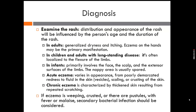Examine the rash — its distribution and appearance will be influenced by the patient's age and duration of the rash. In adults, generalized dryness and itching is the main finding; eczema on the hands may be the primary manifestation. In children and adults with long-standing disease, it is often localized to the flexures of the limbs. In infants, it primarily involves the face, scalp, and extensor surfaces of the limbs, while the nappy area is usually spared. Acute eczema varies from poorly demarcated redness to vesicles, scaling, or crusting; chronic eczema is characterized by thickened skin from repeated scratching. If eczema is weeping, crusted, or there are pustules with fever or malaise, secondary bacterial infection should be suspected.